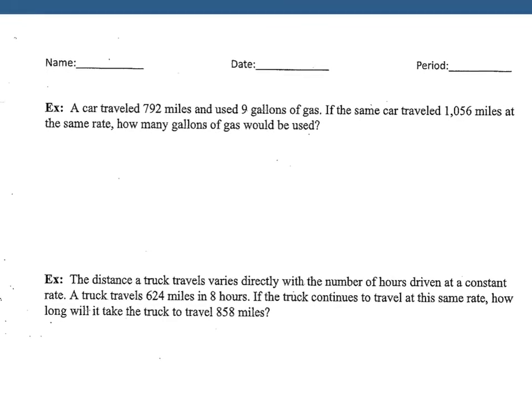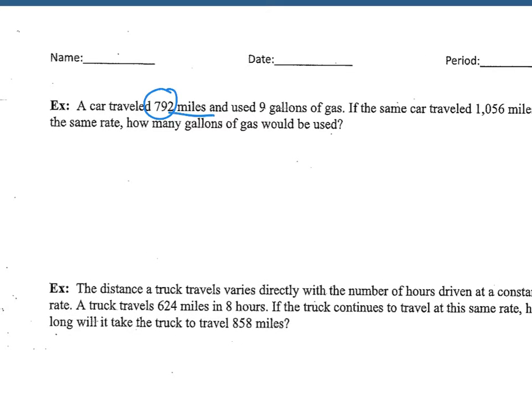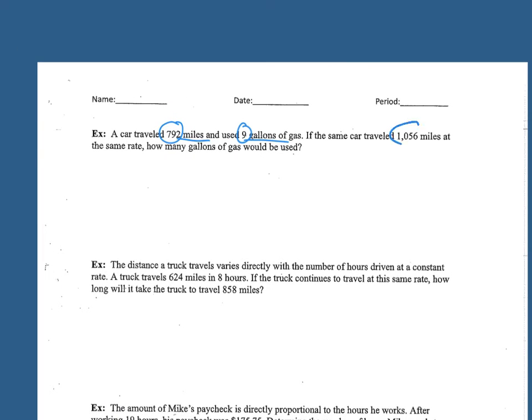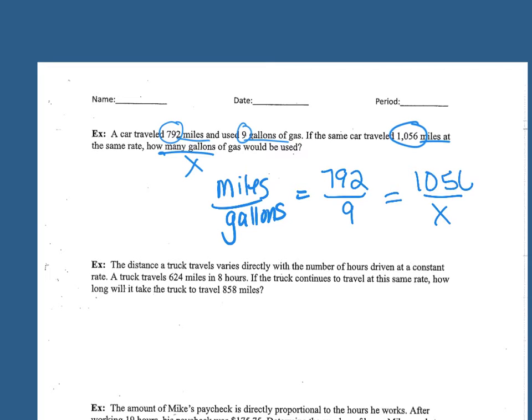Okay, first example, a car traveled 792 miles and used 9 gallons of gas. If the same car traveled 1,056 miles at the same rate, how many gallons of gas would be used? So we're comparing what? Miles to gallons. So my first ratio, I'm going to fill in with what I know, 792 miles for 9 gallons. So I want to see how many gallons it takes to go 1,056 miles.